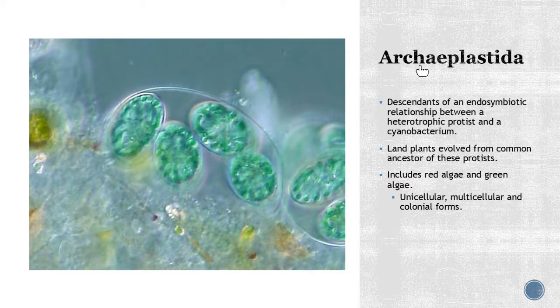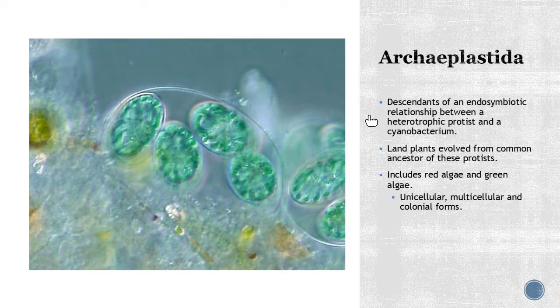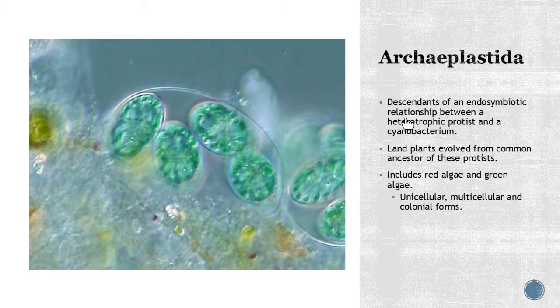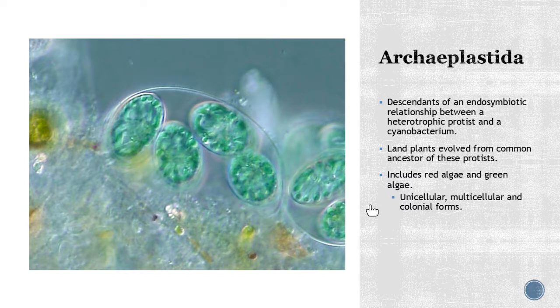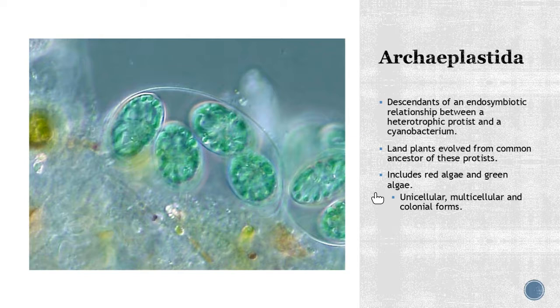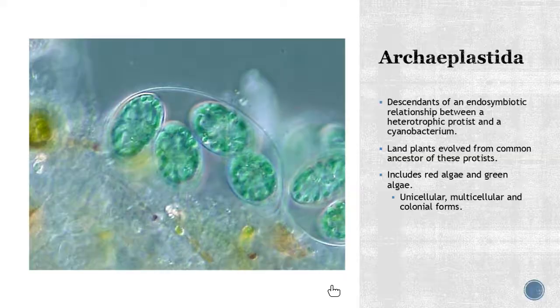The first one is the Archaeplastida. These have the evidence of an endosymbiotic relationship between a heterotrophic protist and a cyanobacterium. This is where we're going to get those first chloroplasts. You can see those nice pretty green things right there. What's really interesting is the first land plants evolved from an ancestor of these protists. So plants are closer related to protists than anything else. These are the very early plant ancestors. You're going to have red algae and green algae fall into this group. Some of them are unicellular, you'll see multicellular, and then colonial forms.